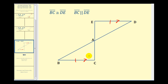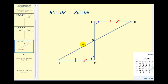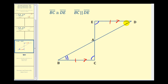If these two segments are parallel, then segments BD and CE would be transversals. Therefore, we know that alternate interior angles would be congruent. So that tells us that angle E is congruent to angle C, and angle B is congruent to angle D. We can use angle-side-angle to prove these two triangles are congruent.